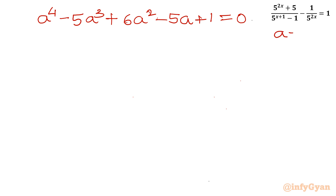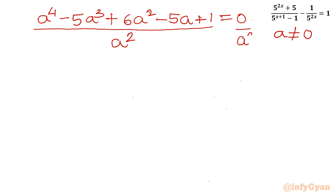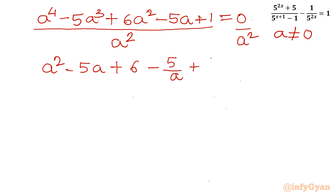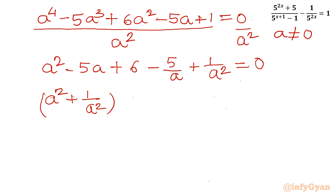I will solve this using the reciprocal equation method. Dividing both sides by a squared (since a cannot be 0), we get: a squared minus 5a plus 6 minus 5 over a plus 1 over a squared, equal to 0. Grouping the first and last terms, and factoring minus 5 from the second and second-last terms: (a squared plus 1 over a squared) minus 5(a plus 1 over a) plus 6, equal to 0.